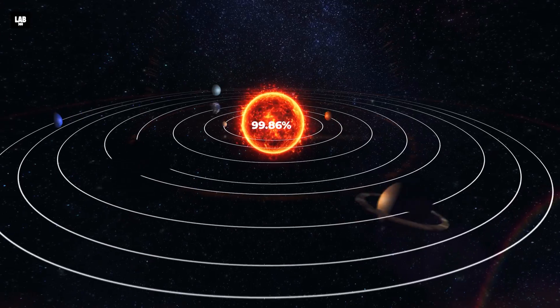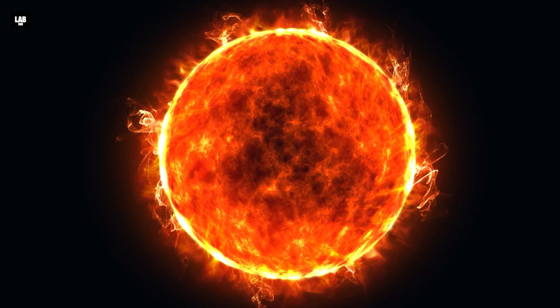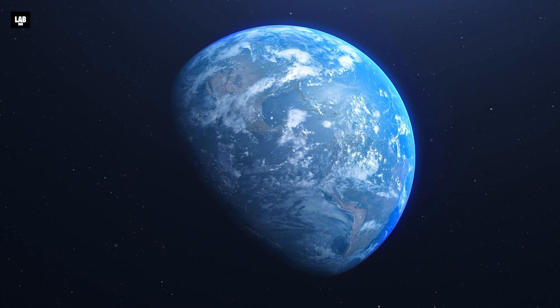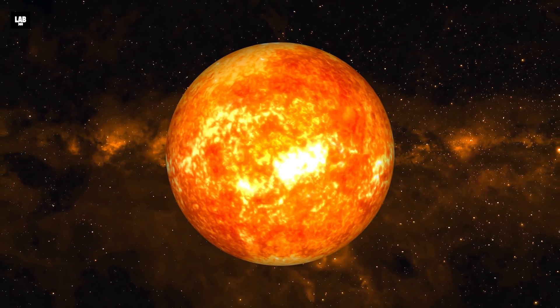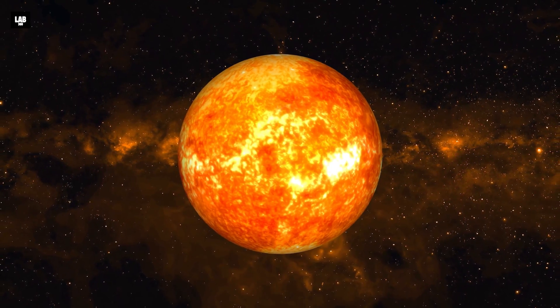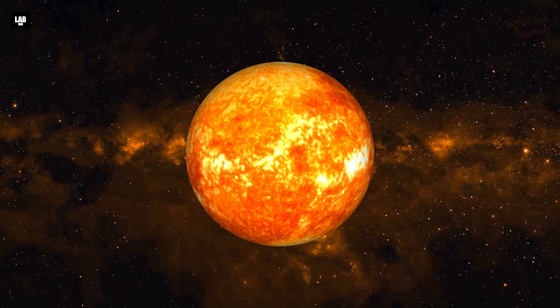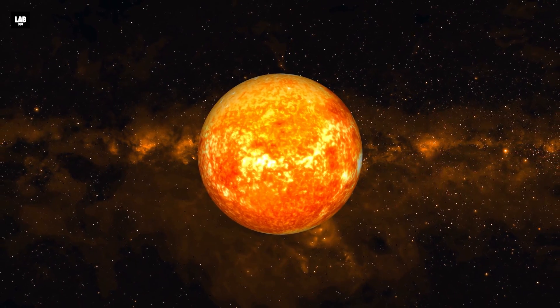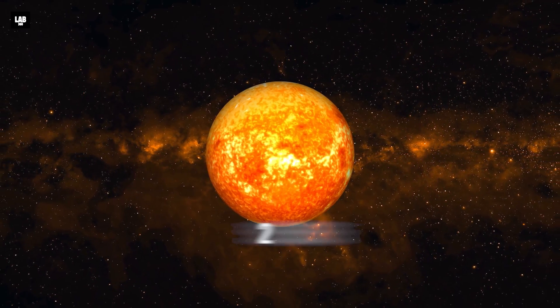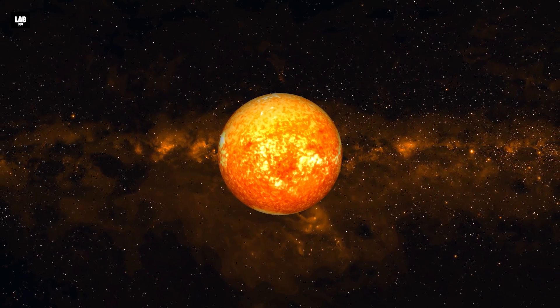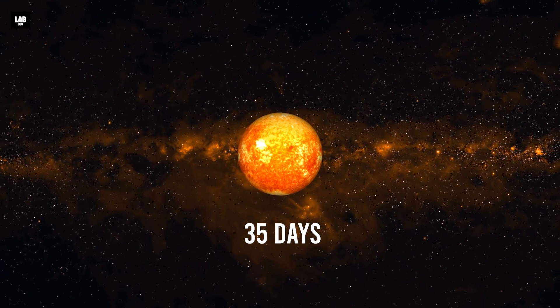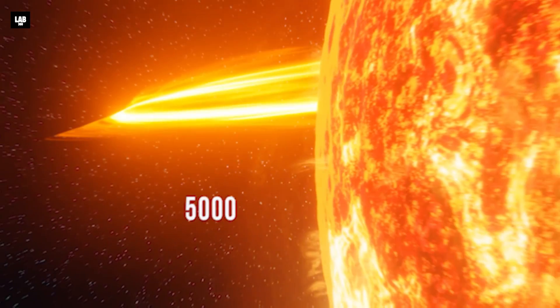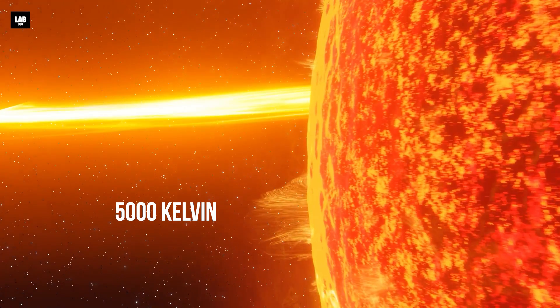The sun also rotates on its axis, just like the Earth's 24-hour rotation. As the sun is so massive and made entirely of gas, its equator rotates faster than the poles. Its equatorial region takes about 25 days to complete one rotation, while the polar regions rotate more slowly, taking 35 days to complete one rotation. The temperature of the surface of the sun is around 5,000 Kelvin.